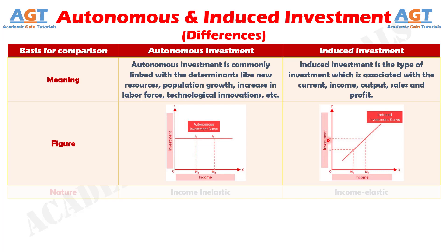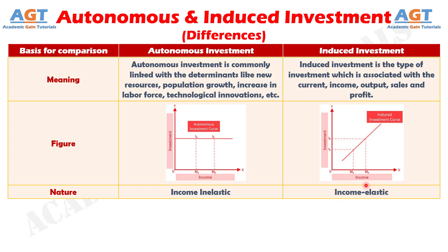Difference Number 3: When it comes to elasticity, autonomous investment is said to be income inelastic, because the volume of autonomous investment remains constant at all income levels. Whereas induced investment is income elastic, as the quantum of investment increases with the increase in the level of income.